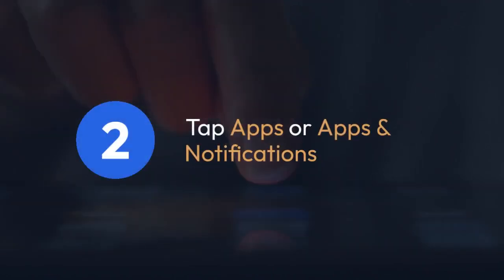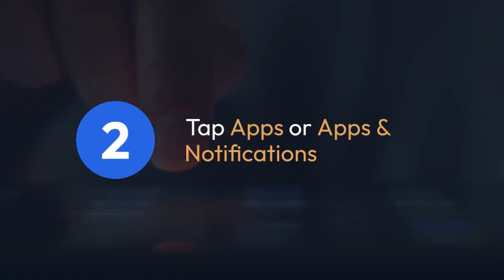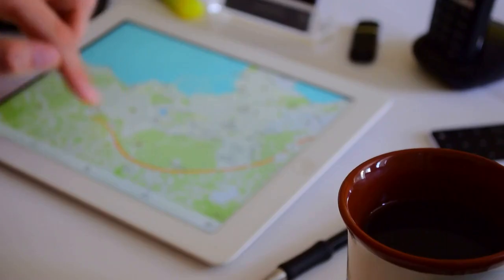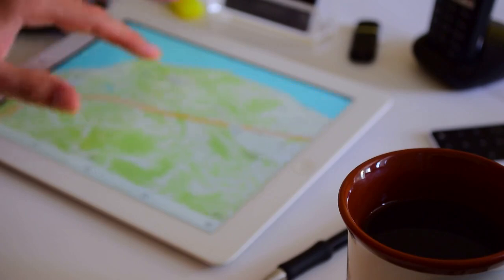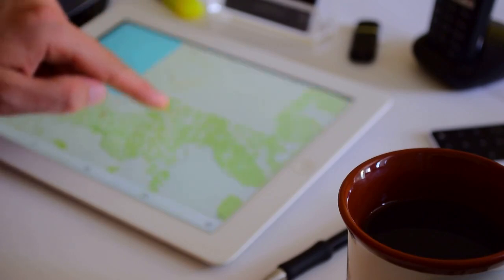Once you're in Settings, scroll down until you find the section labeled Apps or Apps and Notifications. The exact wording might vary slightly depending on your tablet's Android version. Tap on it.